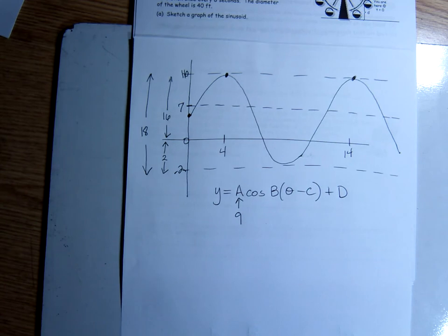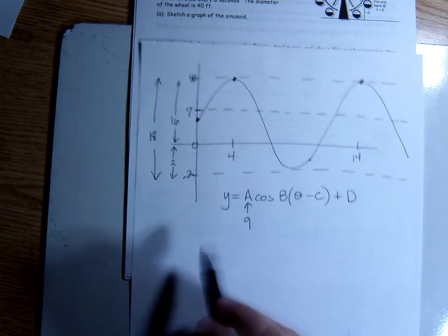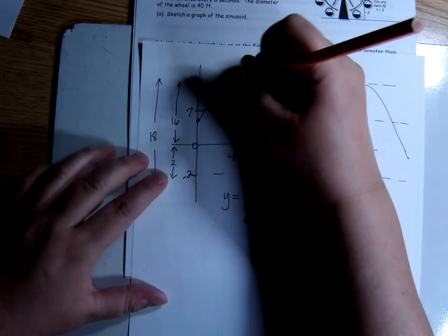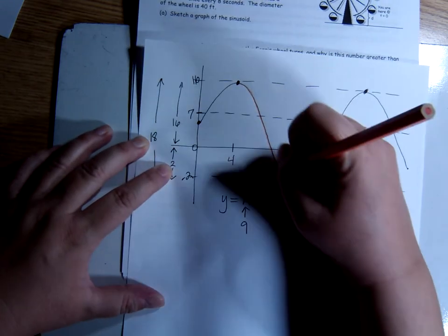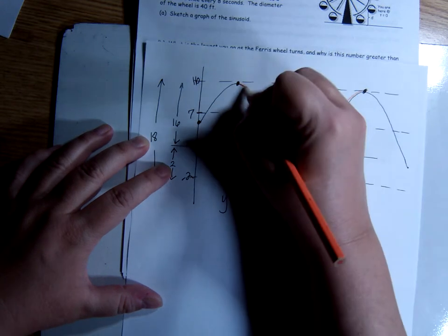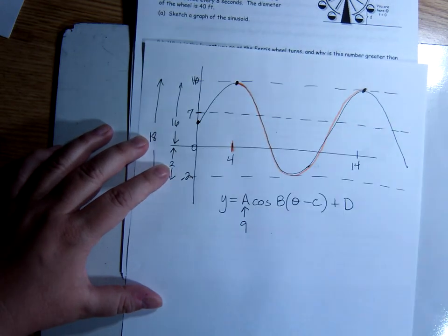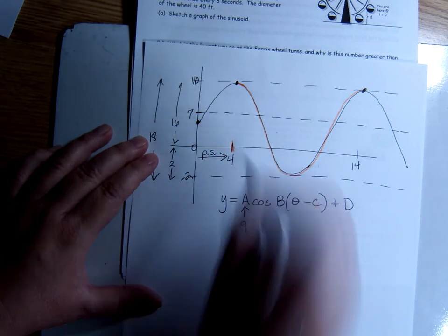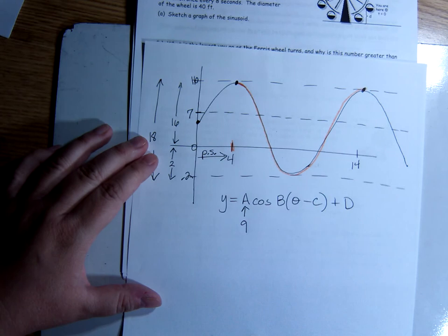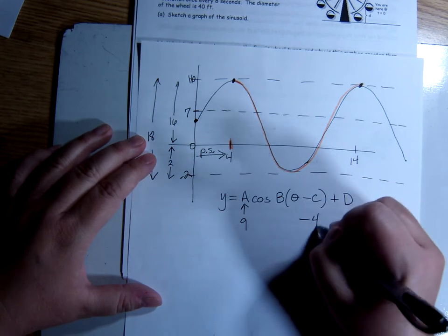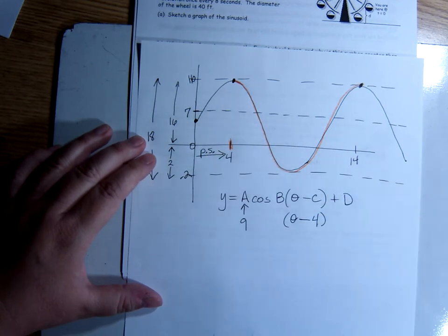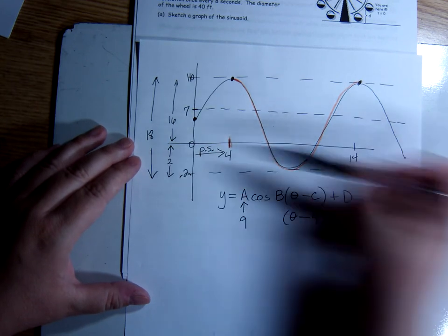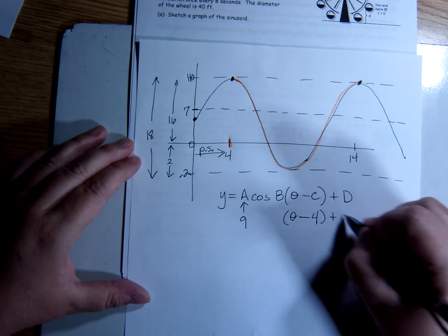And let's go to phase shift next. Phase shift, we're looking at one cycle, and it's starting 4 seconds after he starts timing. So right up here, so my phase shift is 4 seconds. So it's to the right, so that's going to be minus 4. My vertical shift, remember, gets you to that midline. So the middle of it is at 7, so my vertical shift is up 7.